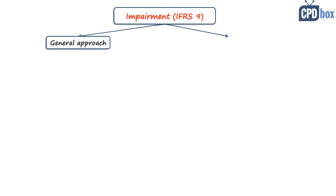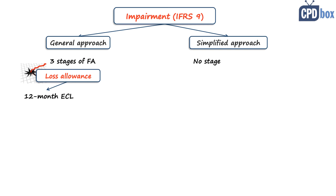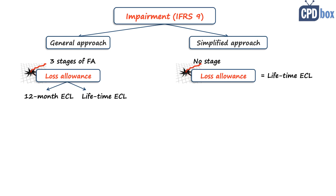IFRS 9 offers two approaches for measuring and recognizing the loss allowance: the general approach and the simplified approach. The general approach grades financial assets into three stages according to their credit quality, and you recognize loss allowance according to the stage. The general model measures loss allowance either at 12-month expected credit losses for stage one assets, or at lifetime expected credit losses for stage two and stage three assets. The simplified approach does not involve stages — all financial assets are simply in one stage — and measures loss allowance at lifetime expected credit losses only. It is much easier.